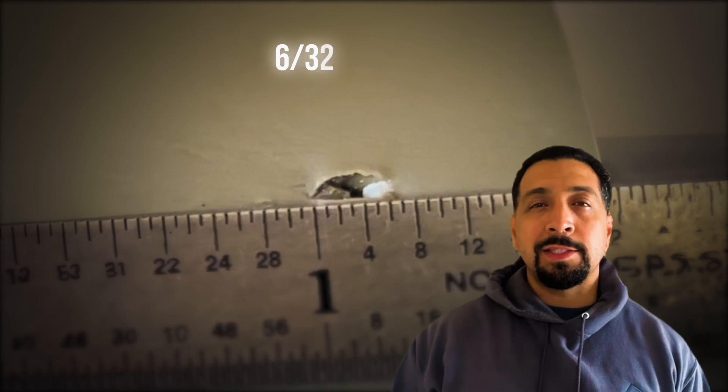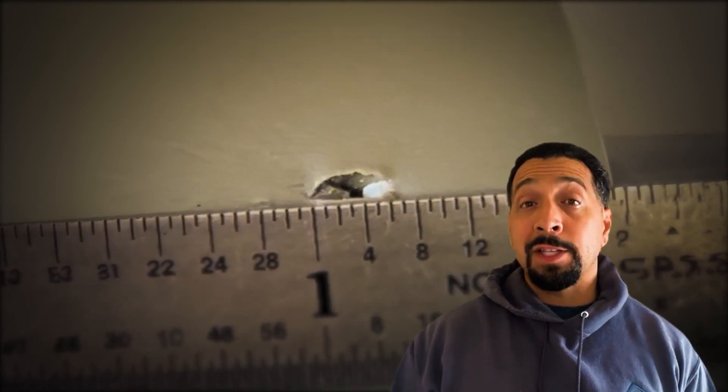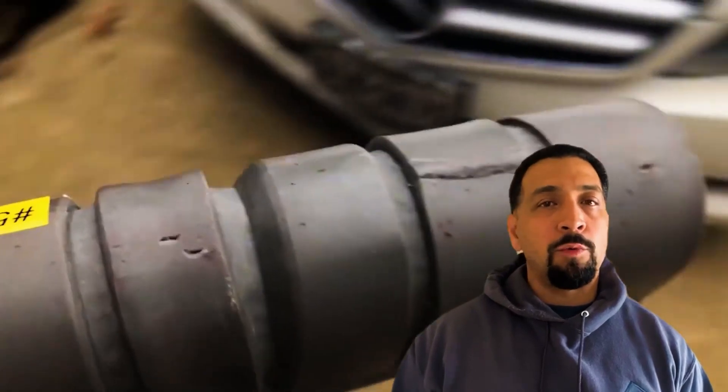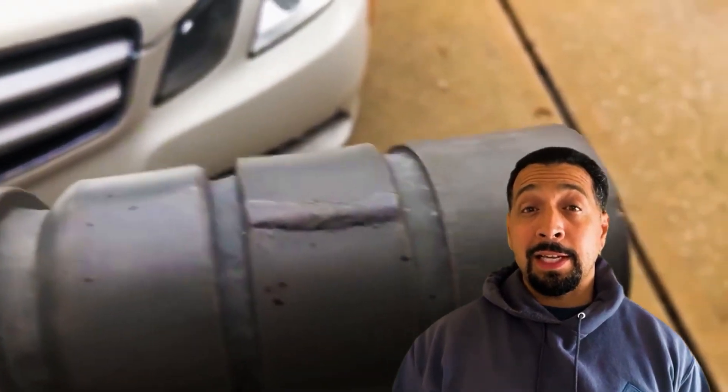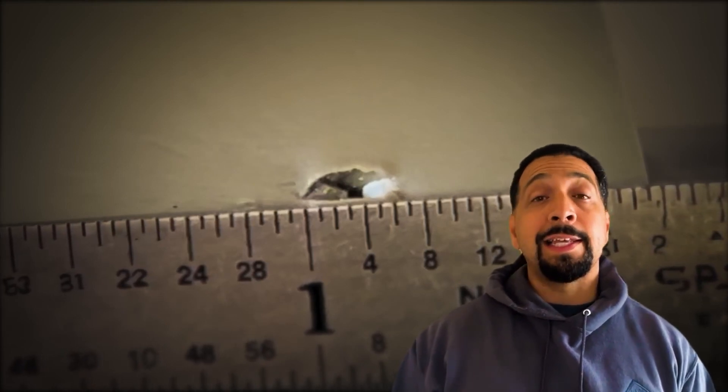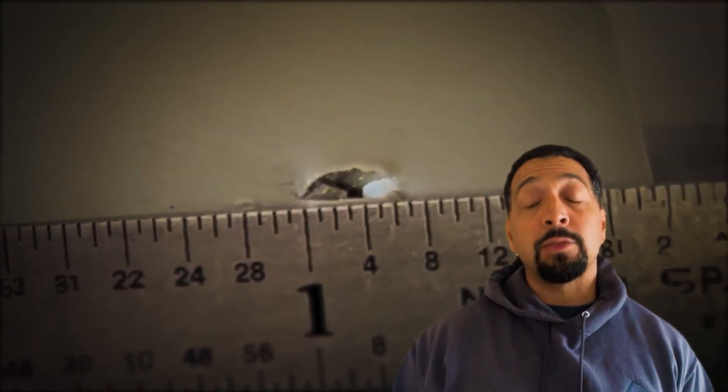For this example, after measuring the single fracture with my machinist ruler, I got between 6/32 and 7/32. For these timed exams, my recommendation is measure it one time and call it. People tend to measure two, three, four times and overthink it. Nine out of ten times you're correct the first time. For this rule, per my reading, it exceeds 1/8 of an inch and it's rejected.